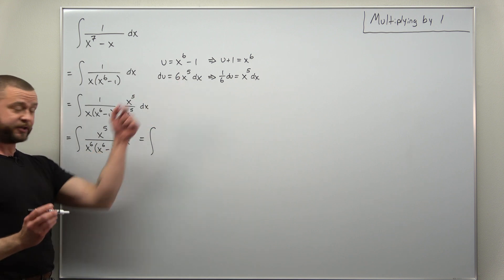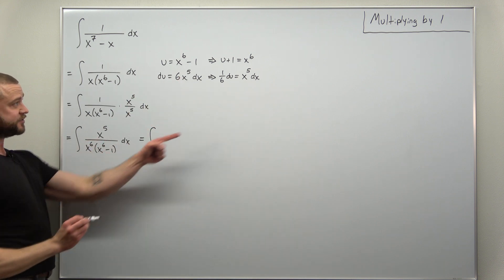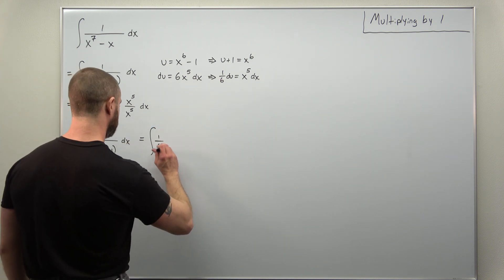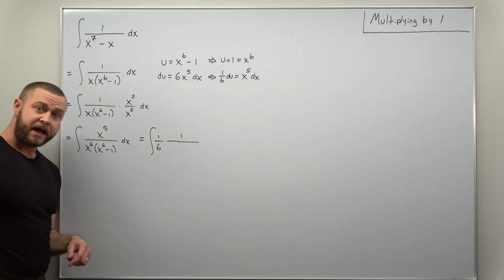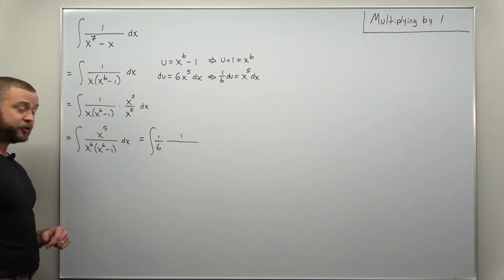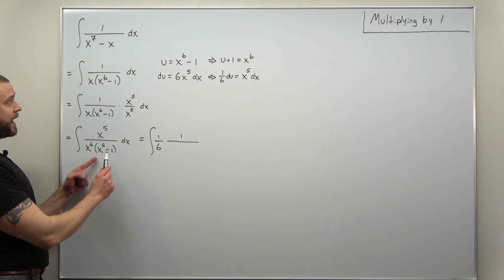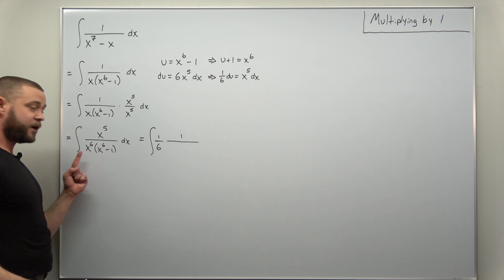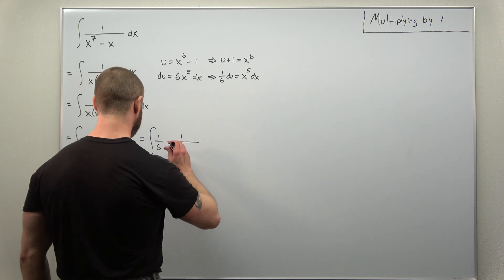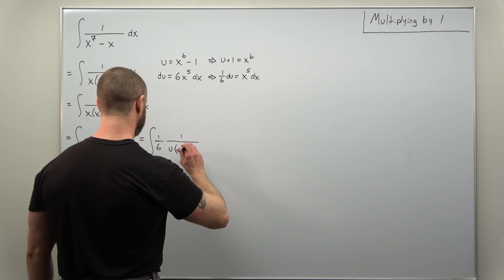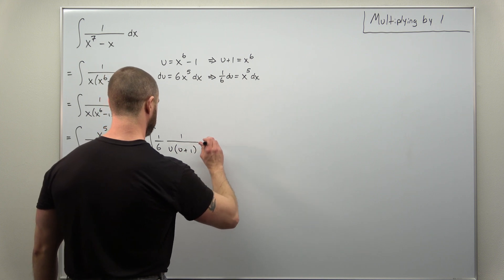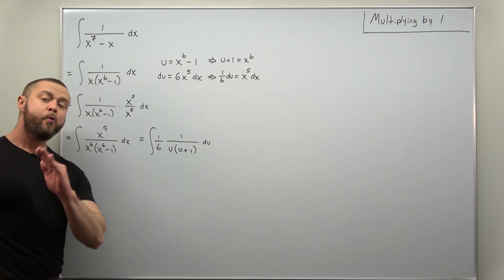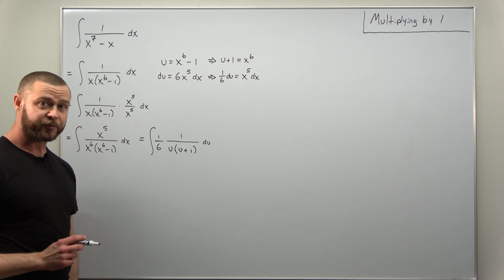So we should be able to easily convert this — let's go ahead and plug that in. We convert from x to u: the x⁵ dx we write as (1/6) du. Making use of our substitutions, x⁶ minus one is u and x⁶ is u plus one. Rearranging the factors, we have in the denominator u times (u plus one), and now we have basically a straightforward partial fraction decomposition.